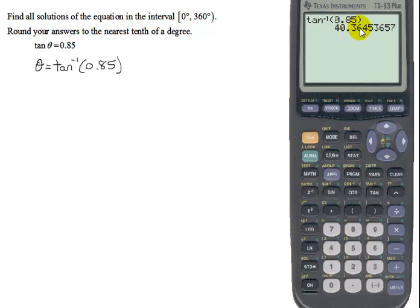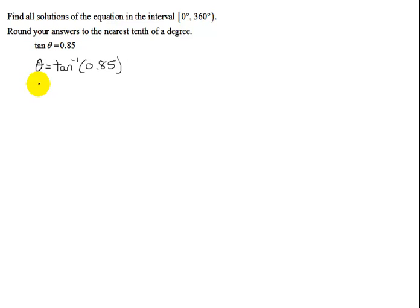Round to the nearest tenth, this 6 is going to round that 3 up to a 4. So it's going to be 40.4 degrees. So I know that theta equals 40.4 degrees.